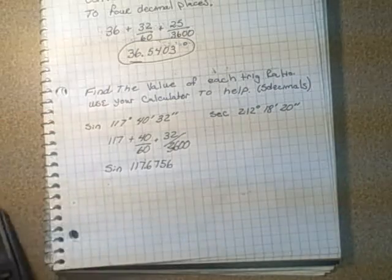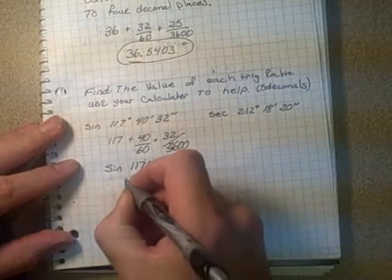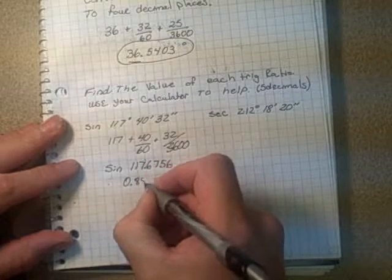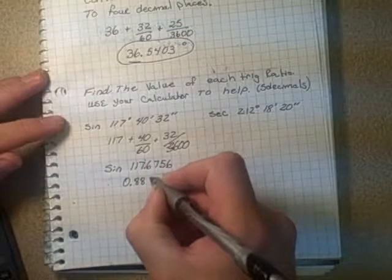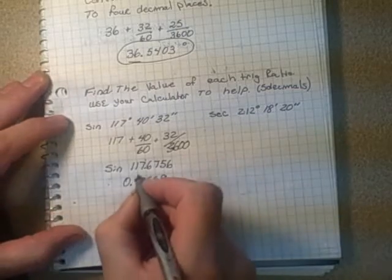So I get a value of 0.88559 to five decimal places.